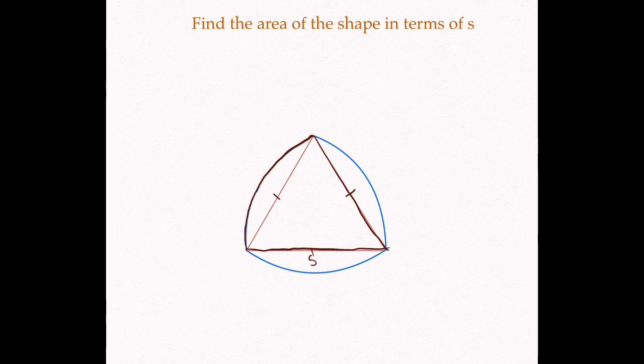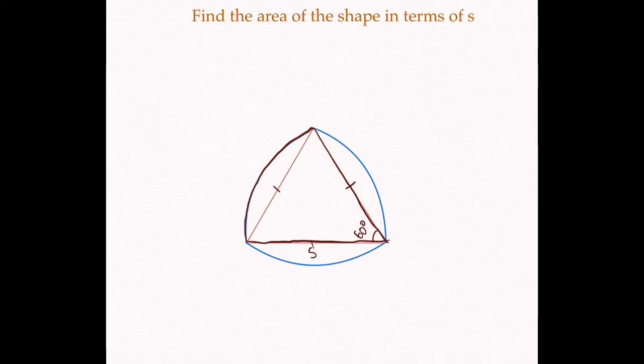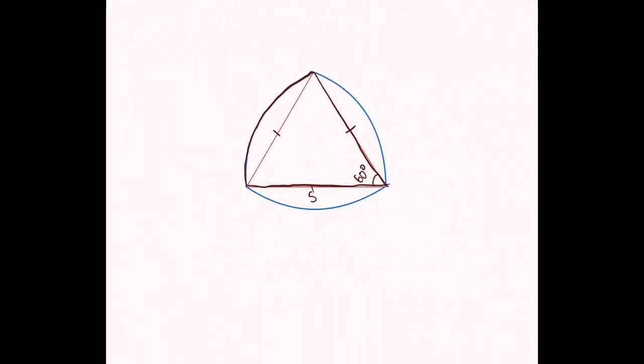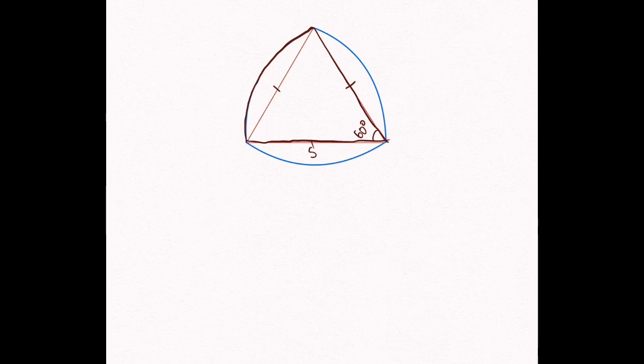To find the area, we need degrees, right? Well, over here, 60 degrees, right? It's an equilateral triangle. So we have all the stuff we need to find the area of this sector. Let's do that now. The area should be 1/6 s squared pi, or pi s squared over 6. That is the area of one sector.